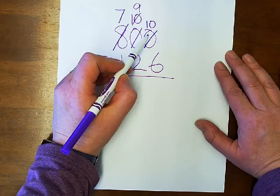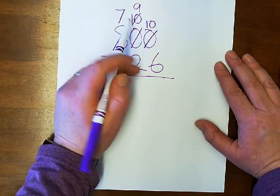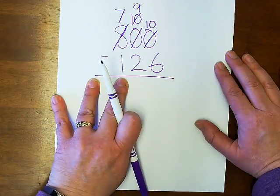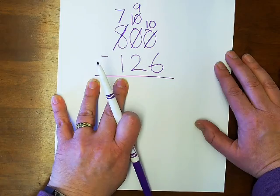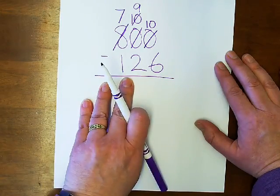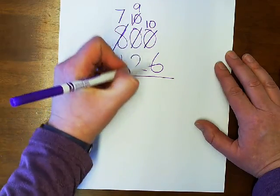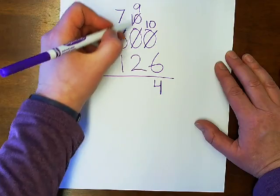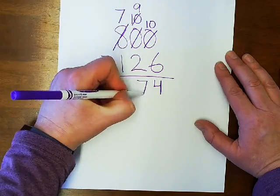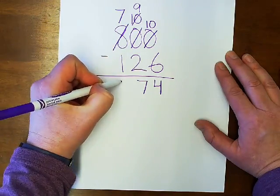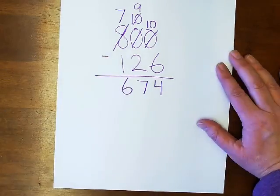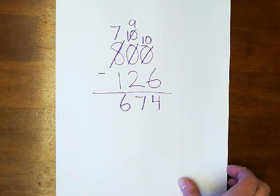Now I'm ready to subtract. Since I've prepared my numbers all at once, I can choose to subtract left to right or right to left. But I'm going to do right to left. So ten minus six is four, nine minus two is seven, seven minus one is six. My answer is 674.